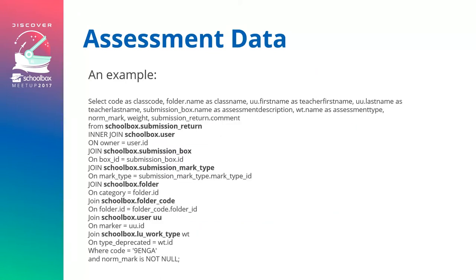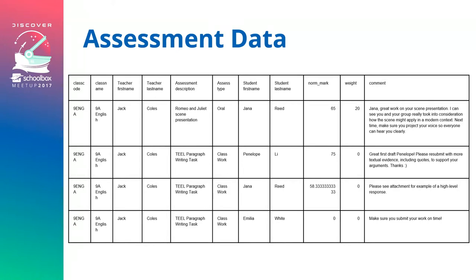To give you an idea of generating a static report, here is a query I ran to generate static report data. It looked at the user table for user details, the submission box for the assessment name and details, the submission mark type to classify and group the mark type used, the folder showing where the assessment item was found, the folder code which is the class code, and the user table again. That gave a report showing class code, class name, teacher first and last name, assessment description, assessment type, student first and last name, and the two marks: the normalised mark plus the weighting.